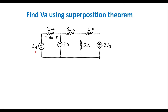Here we can observe that 4 volt is an independent voltage source, and 2 amp is also an independent current source, while 2VA is a dependent voltage source — it is voltage dependent on VA, so it is a voltage dependent voltage source. In superposition theorem, we have to consider one independent source at a time, and keep the dependent source as it is.